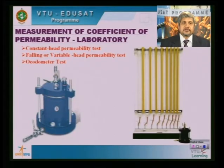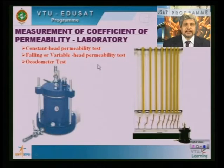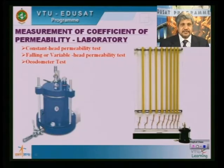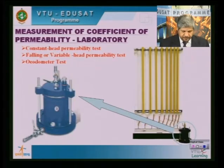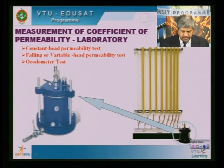Yesterday we were talking about the constant head permeability test. These are the laboratory equipments employed in determining permeability values using constant head and variable head permeability tests. This is the permeability cell, and this is the standpipe assembly which we discussed yesterday. We also briefly looked into the procedure — we required to maintain a constant head, the specimen is prepared and kept in this mould and made 100% saturated by letting water in and opening the air valve. We can ensure 100% saturation by removing all air voids from this air valve.